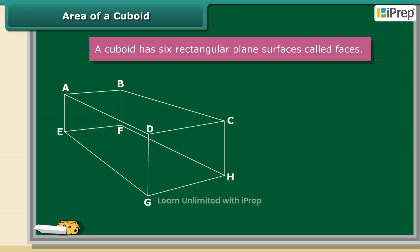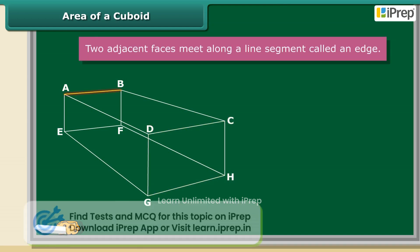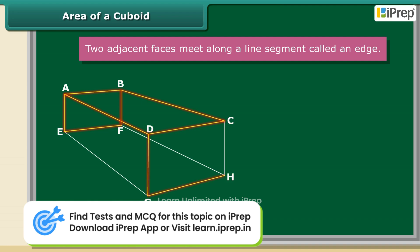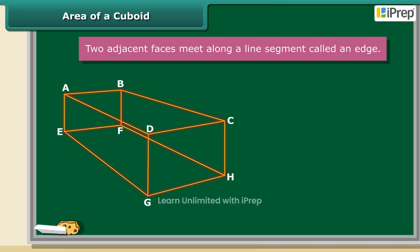EFHG, ADGE, and DCHG are the faces of the given cuboid. Two adjacent faces that meet along a line segment is called an edge.